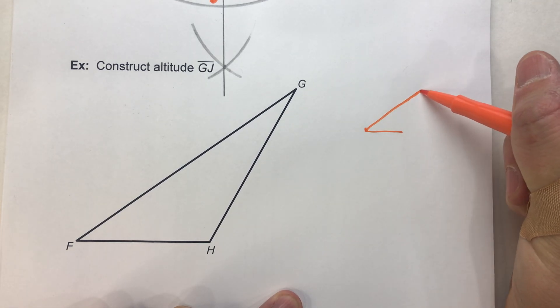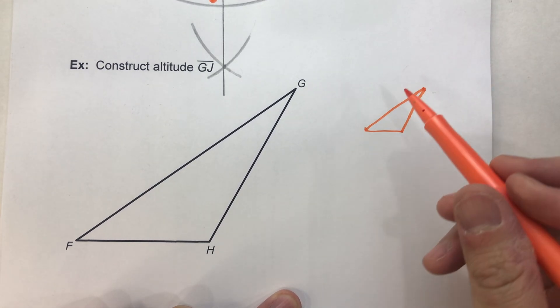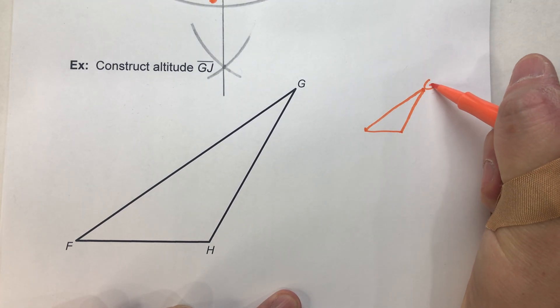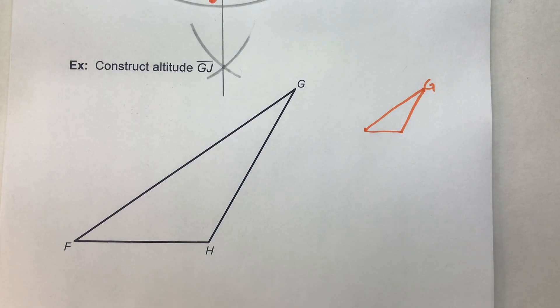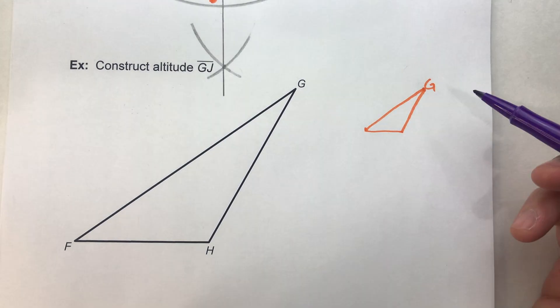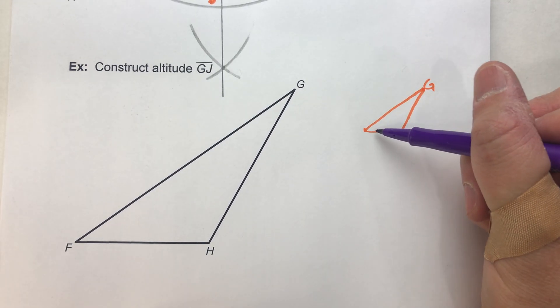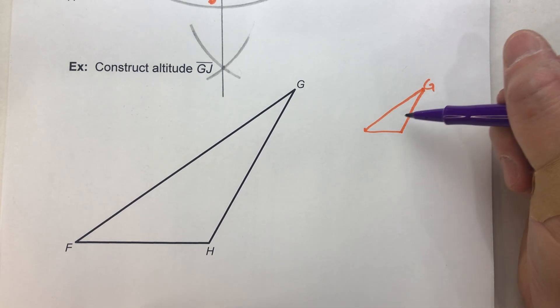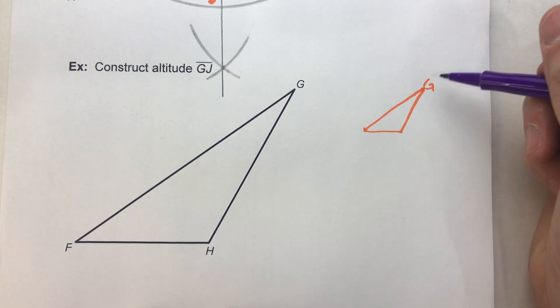So this time we have a triangle that kind of sticks out a bit. So here's G. And an altitude for this would go from G perpendicular to the opposite side. But in order for it to be perpendicular to this opposite side,